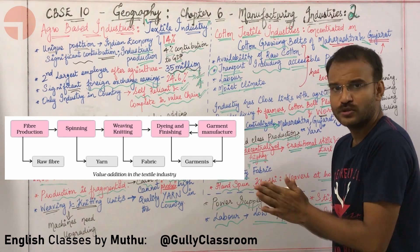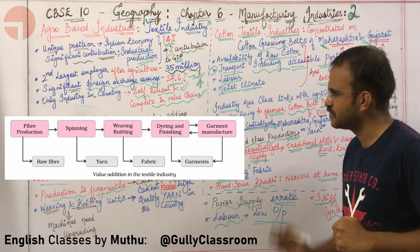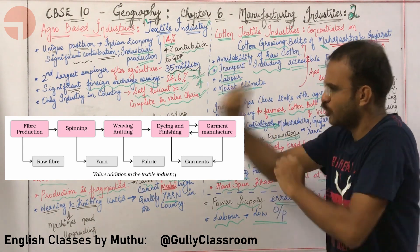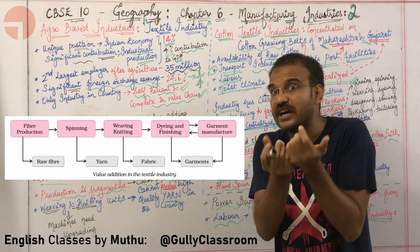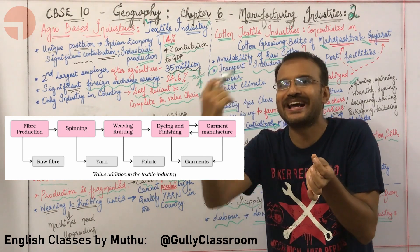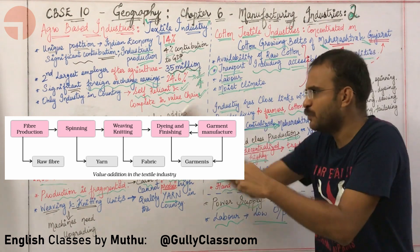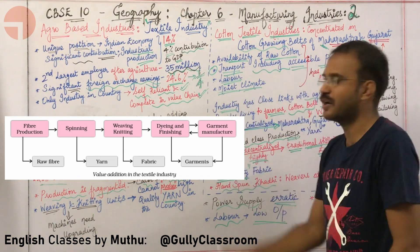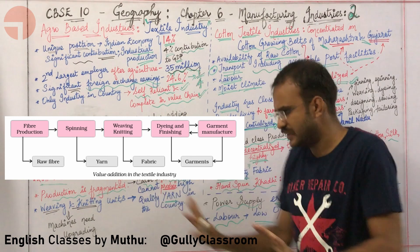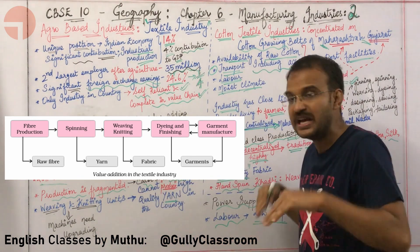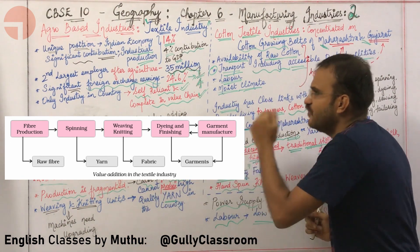The first step is fiber production — producing cotton fibers. Using those cotton fibers, you do spinning. Spinning is the process that converts cotton fibers into yarn — Y-A-R-N — which means good quality thread. Next, this yarn undergoes a process of weaving and knitting, which converts yarn into fabric.